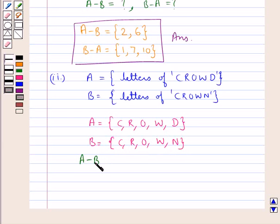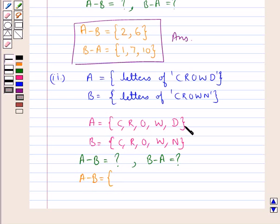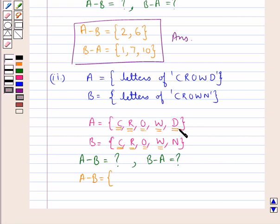We need to find A minus B and B minus A. First, A minus B is the set containing elements that belong to set A but not set B. Element C belongs to set B also, so it won't be included in A minus B. Similarly, elements R, O and W belong to both sets A and B, so they won't be included. Then element D is present in set A but not in set B, so we include it. Thus A minus B is the singleton set containing the element D.